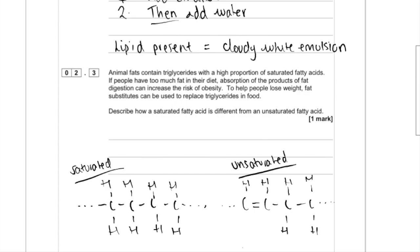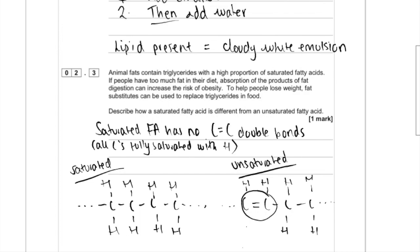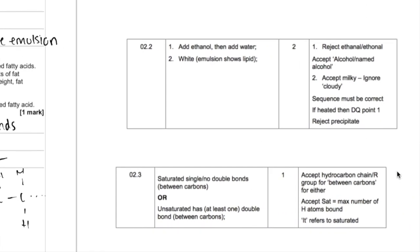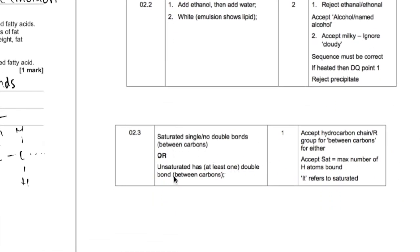How about an unsaturated fatty acid? The difference here is that there's one or more carbon-carbon double bond. This means that not all of them are saturated with hydrogen. So how are we going to phrase our answer? Let's have a look at the mark scheme for that. They've phrased it pretty much exactly the same here.